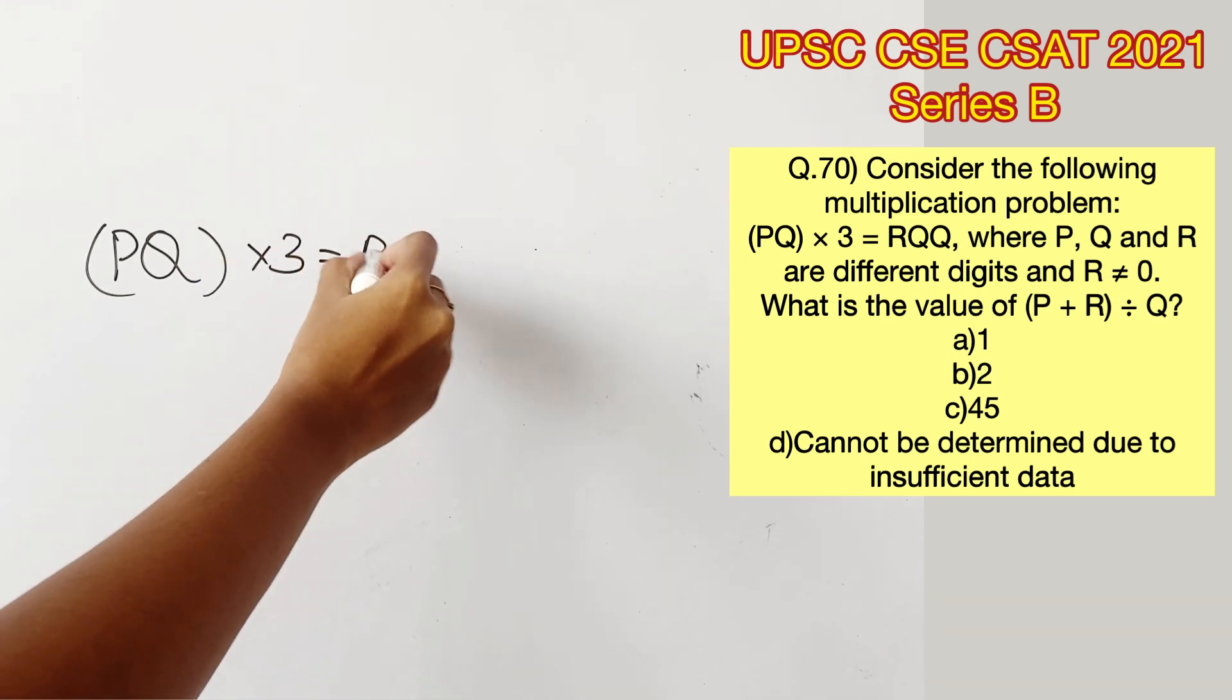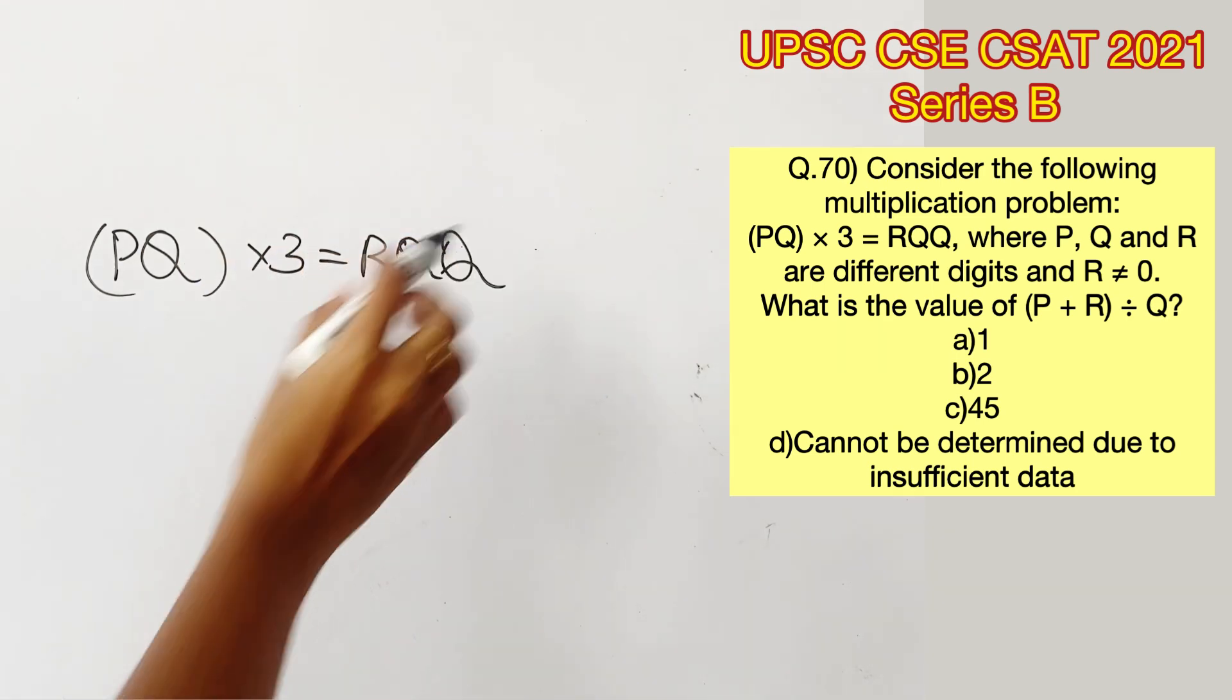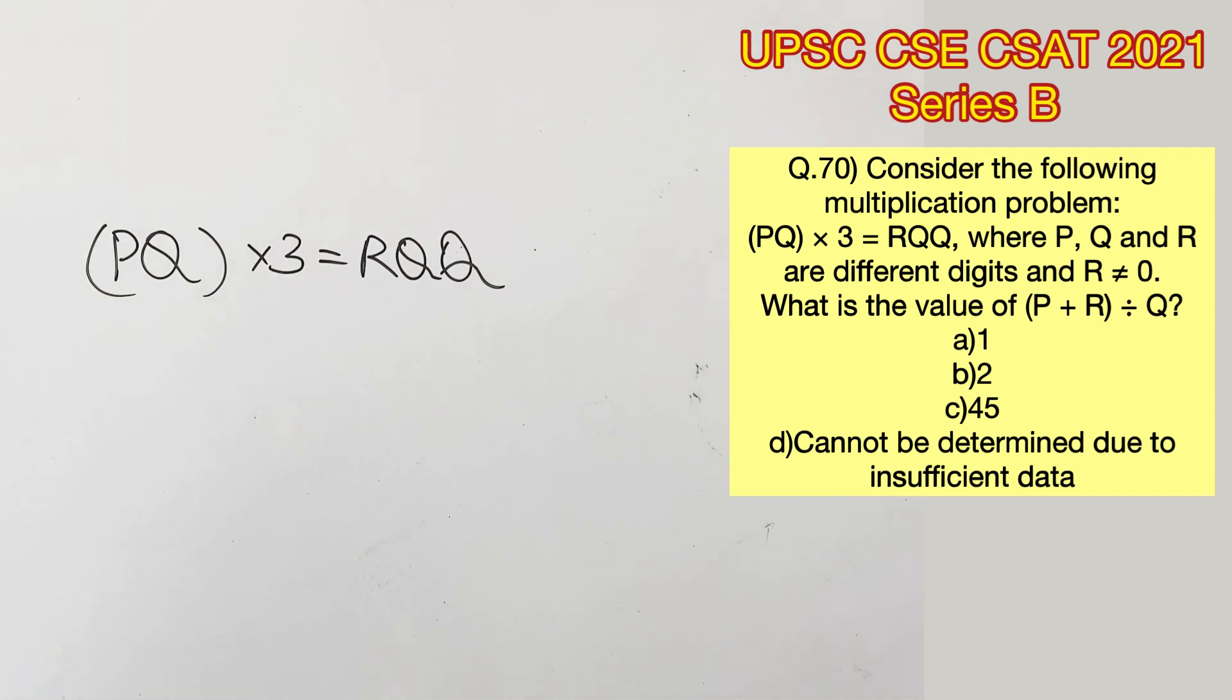In the following multiplication problem, PQ into 3 equals RQQ. Given that R is not equal to 0 and P, Q, R are different digits.